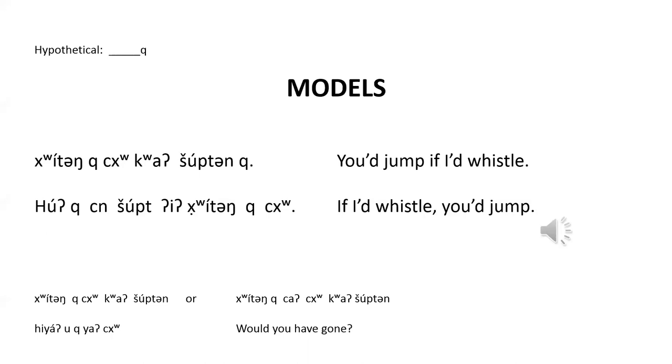When the hypothetical 'q' is used with a past, the best translation into English is with 'would have.' For example, 'hui dunk yat qua shuktin' is translated as 'I would have jumped if you whistled.' Notice that one or both clauses of the conditional construction may have the hypothetical 'q.'